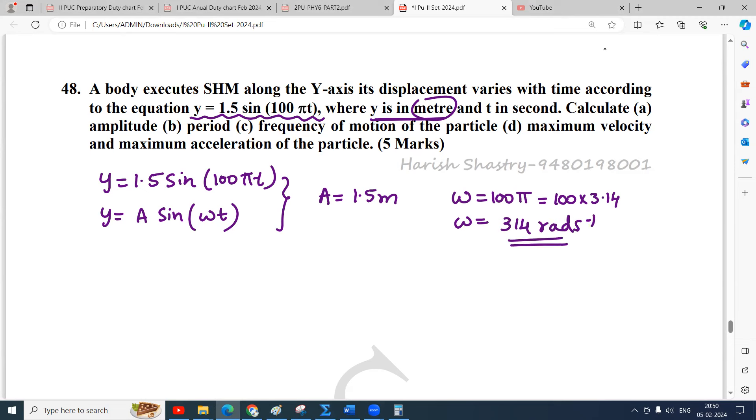That is omega. Then what else is needed? They want period and frequency. Omega equals 2 pi nu. 100 pi in the place of omega, so 100 pi equals 2 pi nu. Pi gets cancelled, so nu equals 50 Hertz.